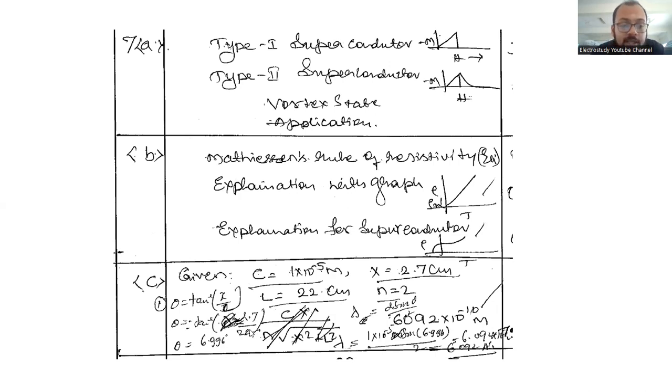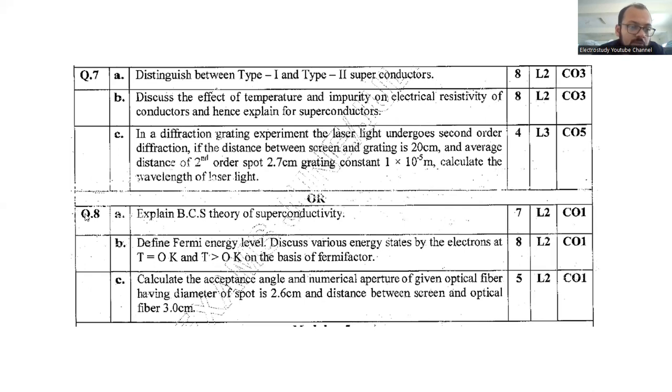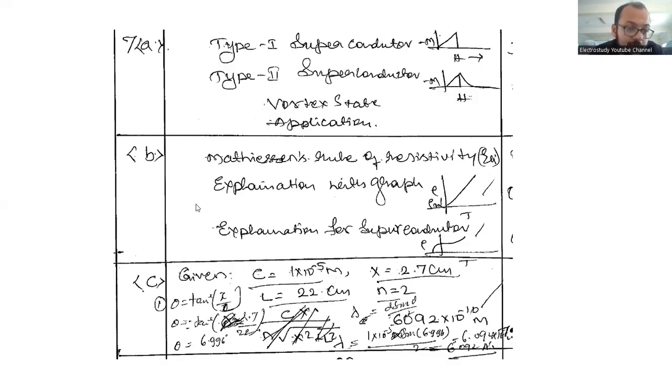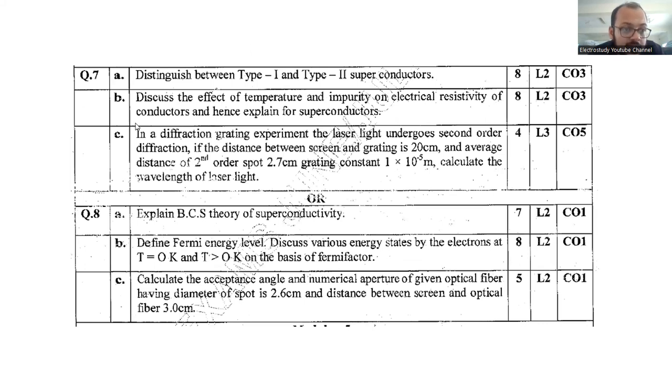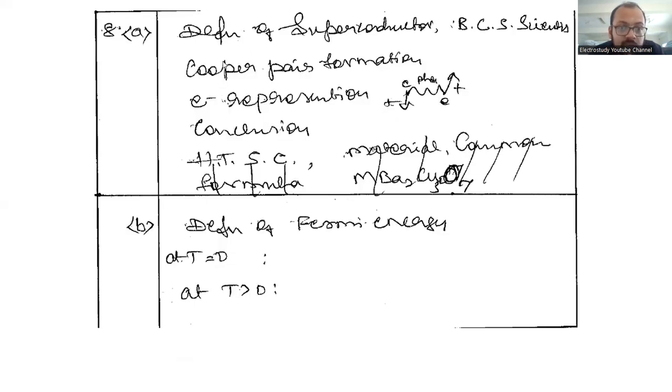Question 8a: Explain BCS theory of superconductivity. I found this question in several question papers, so don't skip this. What you should write: explain the superconductor according to BCS theory, then Cooper pair formation, then energy representation and graphical representation, and write a suitable conclusion.